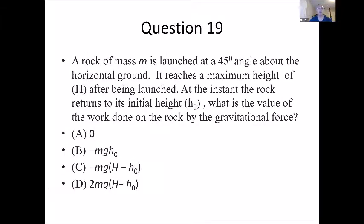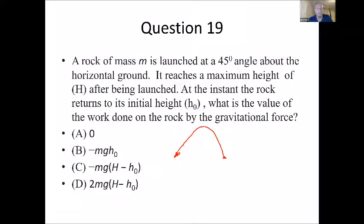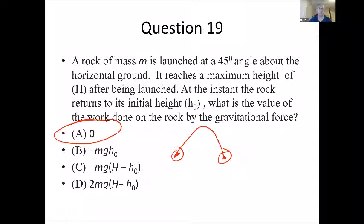Question nineteen: a rock of mass m is launched at 45 degrees and reaches a maximum height H. At the instant the rock returns to its initial height, what is the work done by gravitational force? When it's back to its original height, it has the same speed as when it left — assuming no friction. Because it has the same speed, the kinetic energy is the same. That means there's no net work done on the rock, so the answer is zero — choice A.